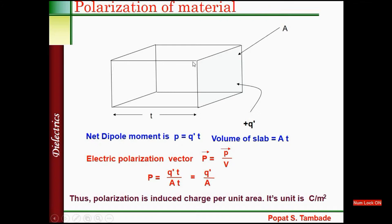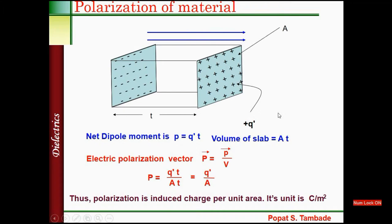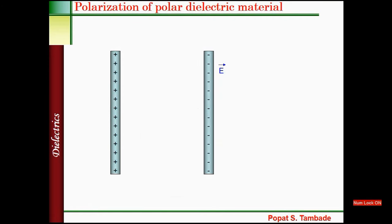Now we will consider the polarization of material. We have a dielectric slab of cross-sectional area A and length T, so its volume is A times T. When placed in an external electric field, positive charge Q' is induced on one surface and negative charge on the other. The net dipole moment is P equal to Q' into T. The electric polarization vector, capital P, equals net induced dipole moment divided by volume, giving Q'T divided by AT, which equals Q' divided by A. Thus polarization is induced charge per unit area, with unit coulomb per meter square.